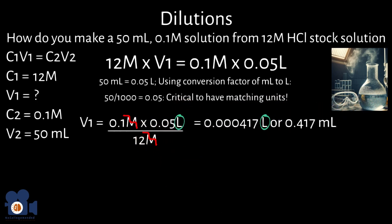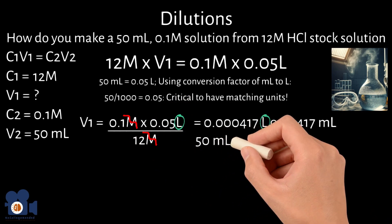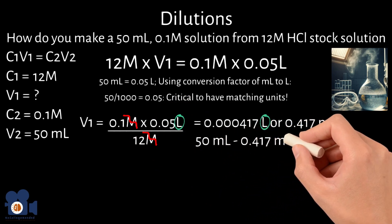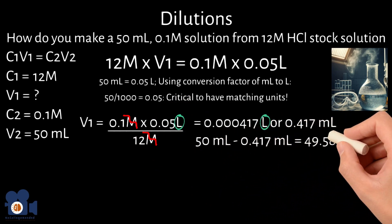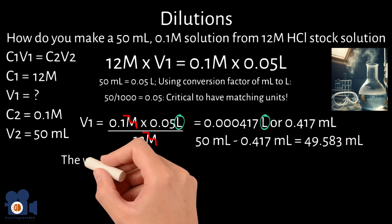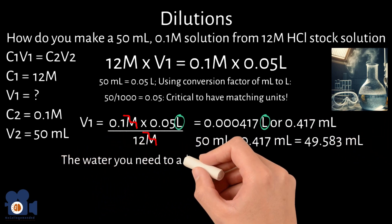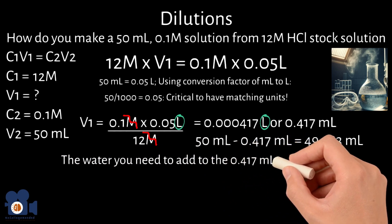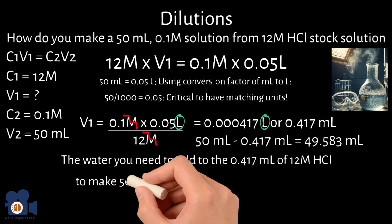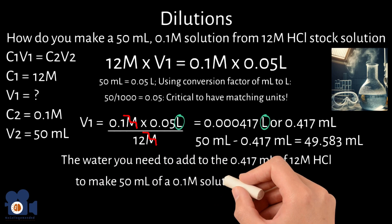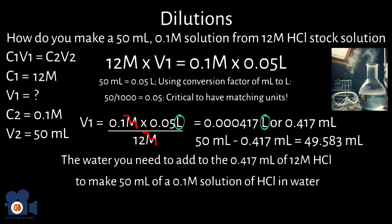From there, you take 50 milliliters, your total volume, minus 0.417 milliliters to get 49.583 milliliters, and that is how much water you need to add to the 0.417 milliliters of HCl to make 50 milliliters of a 0.1 molar solution of HCl in water.